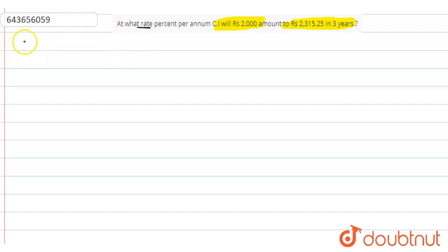We need to find rate R. The principal P is equal to 2000 rupees, the amount A is equal to 2315.25 rupees, and the time T is equal to 3 years.